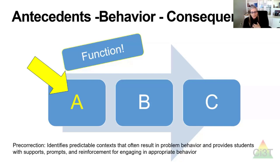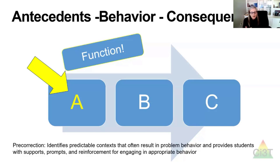Focusing on antecedents feels better for kids, it feels better for us, and it prevents some of those more intense behaviors from ever occurring. These are things like pre-correction — a low-intensity strategy you can use to let students know what the expectations for success are in an environment or activity before they begin. That sets you up for looking for kids who are following those expectations and delivering behavior-specific praise. Those are the early kinds of strategies that help prevent more escalated behavior.